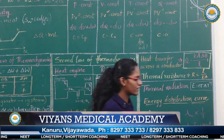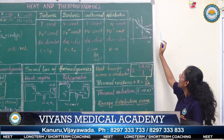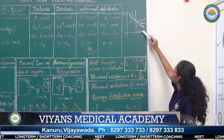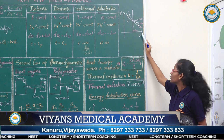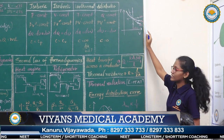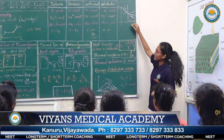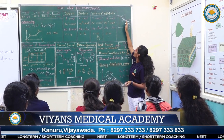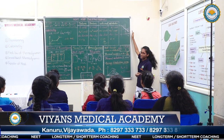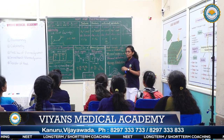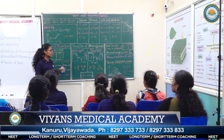Let us see the PV graph for different thermodynamic processes. In this PV graph, the area under the adiabatic curve is less than the area under the isothermal curve. Since the area of the PV graph indicates work, the work done by the isothermal process is greater than the work done by the adiabatic process. By this graph, we can correlate the relation between works of different thermodynamic processes.